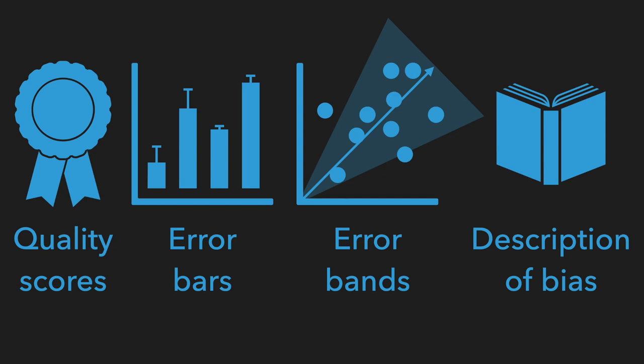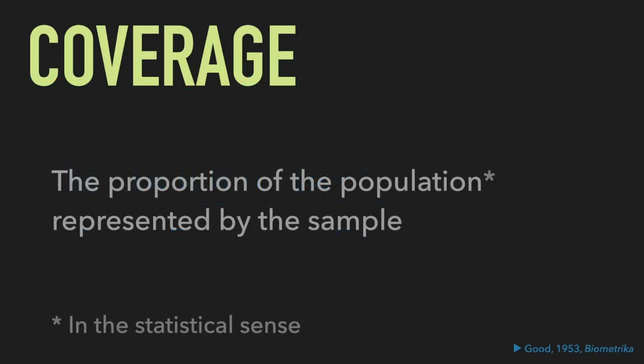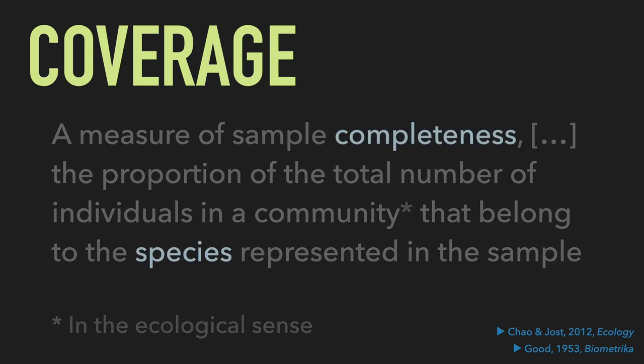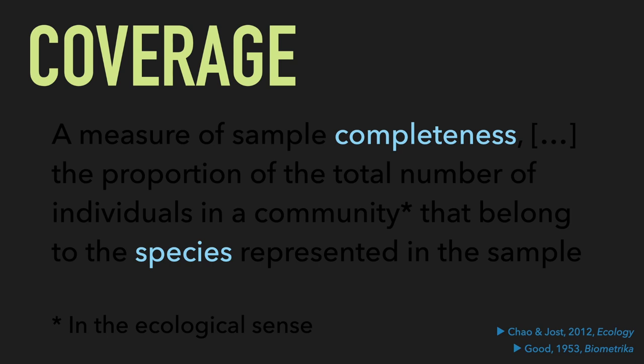Importantly, most point measurements are actually derived from samples. This means that we generally use data to infer something about a much larger, unobserved set — but how well a sample represents the whole thing is where we need to concern ourselves with the concept of coverage. Coverage, as defined by Good and Turing, is the proportion of the population represented by the sample. Note that population here is taken in the statistical sense of the complete set being sampled, not in the ecological sense. Chow and Jost offer a rewording that might be a little clearer specific to biological samples: coverage is a measure of sample completeness — the proportion of the total number of individuals in a community that belong to the species represented in the sample. This definition separates two aspects of coverage: the completeness measure and the category definition.